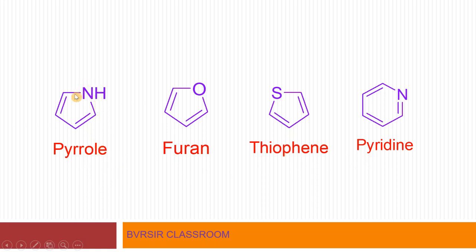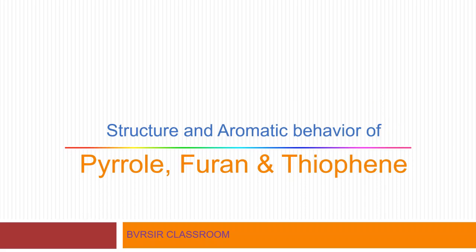In pyrrole, the heteroatom is nitrogen. In furan, oxygen is the heteroatom. In thiophene, sulfur is the heteroatom. In pyridine, nitrogen is the heteroatom. So in all these cyclic ring systems, there is an atom other than carbon. We will study these compounds in this lecture. Watch the subsequent videos for a complete picture — this will be useful for examinations and competitive exams. We will first take up the structure and aromatic behavior of pyrrole, furan, and thiophene, and then separately discuss pyridine.